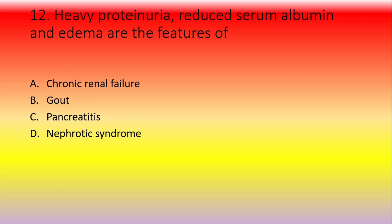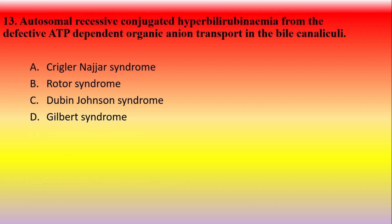Heavy proteinuria, reduced serum albumin, and edema are the features of — option A: chronic renal failure, option B: gout, option C: pancreatitis, option D: nephrotic syndrome. These are the clear-cut features of nephrotic syndrome. The answer is nephrotic syndrome.